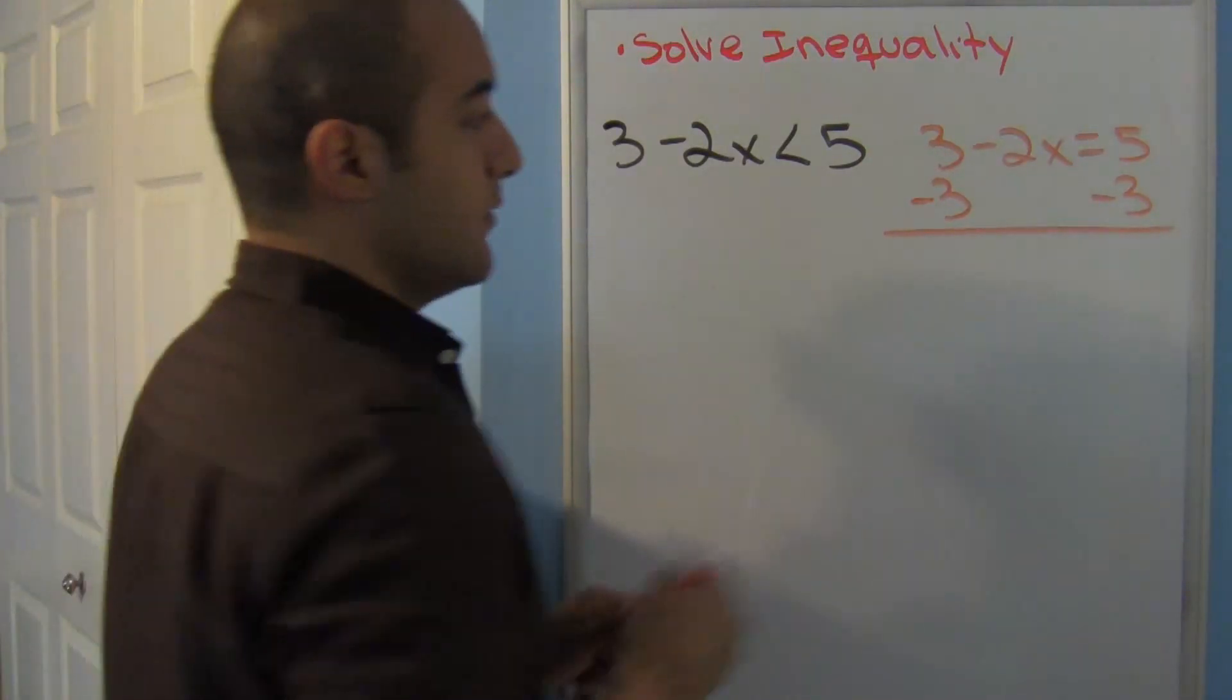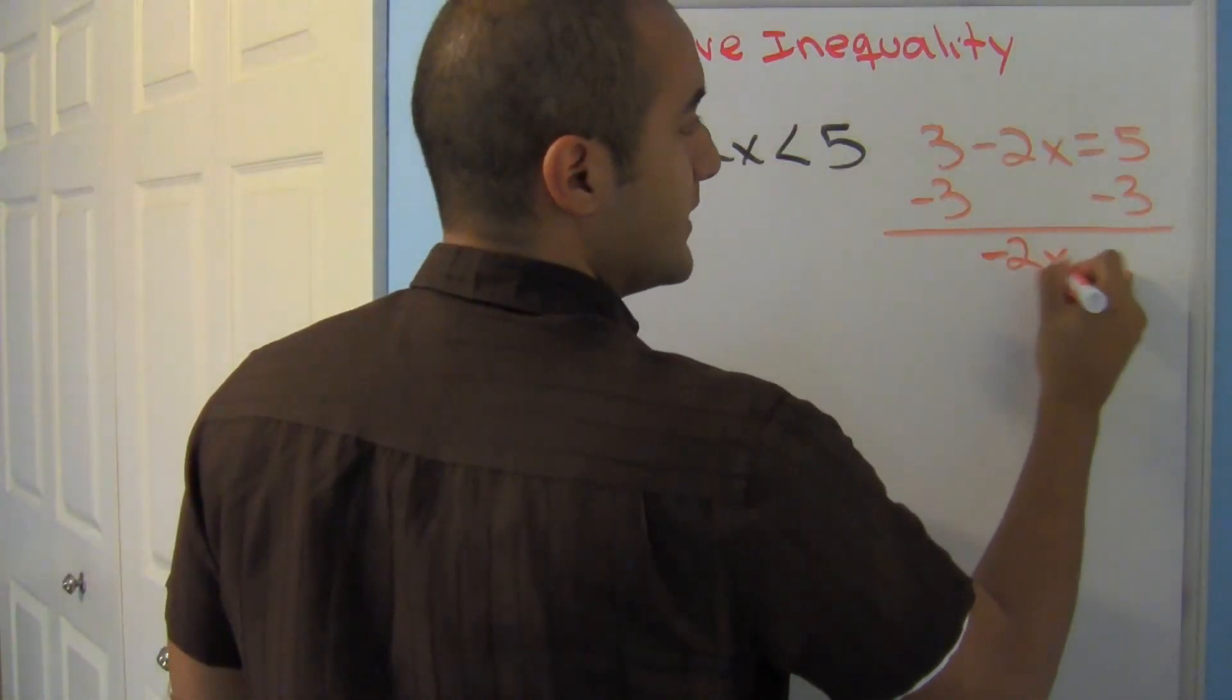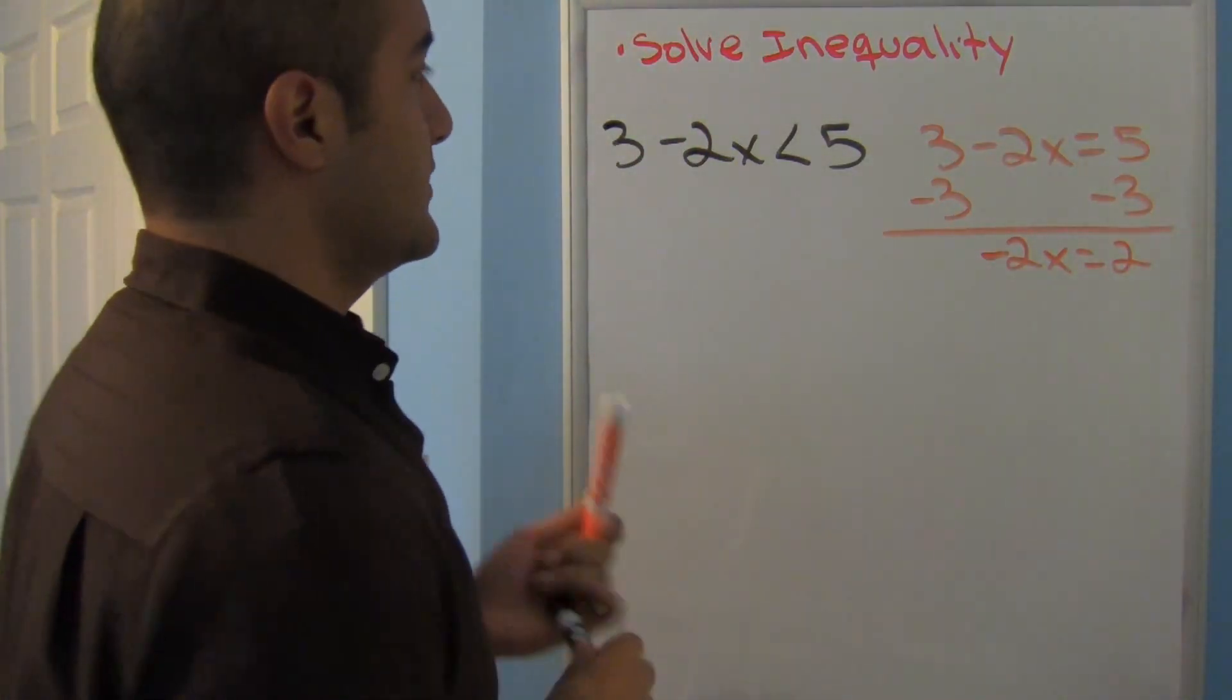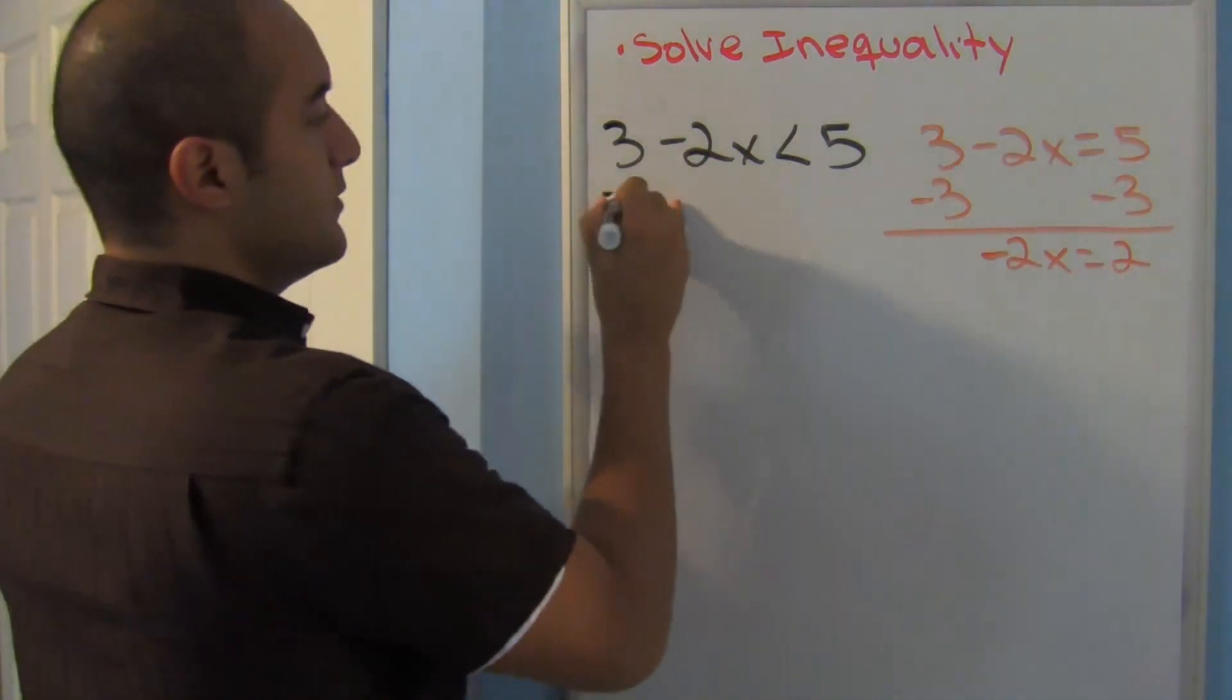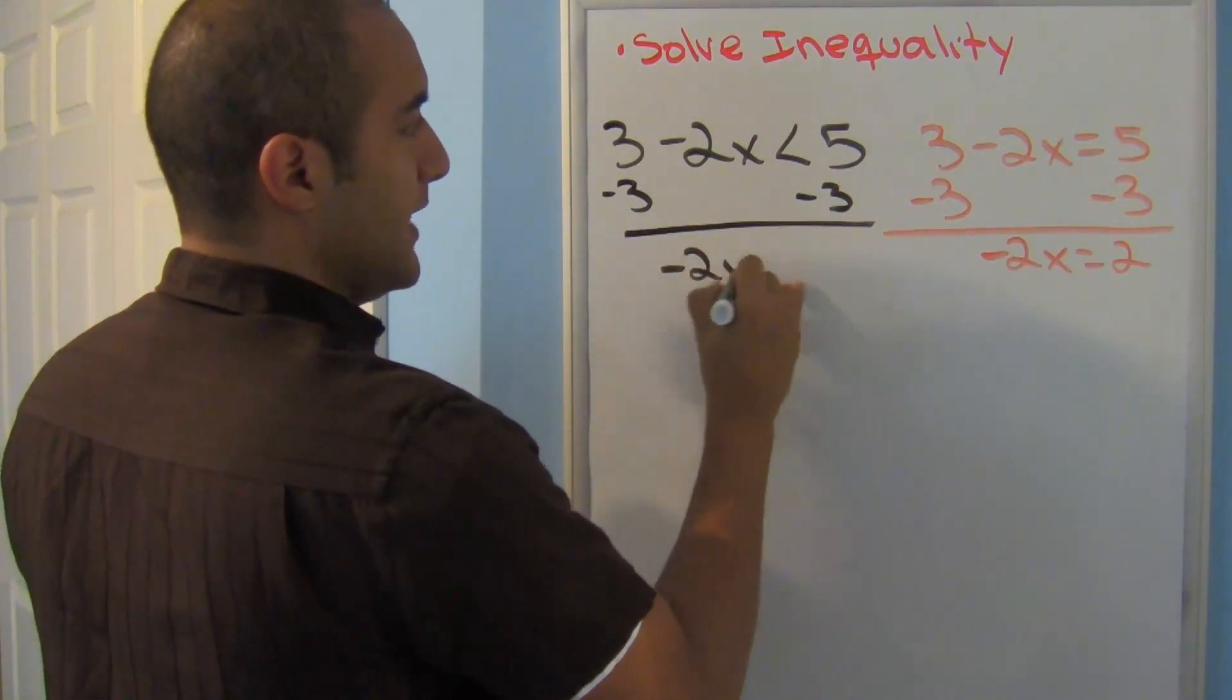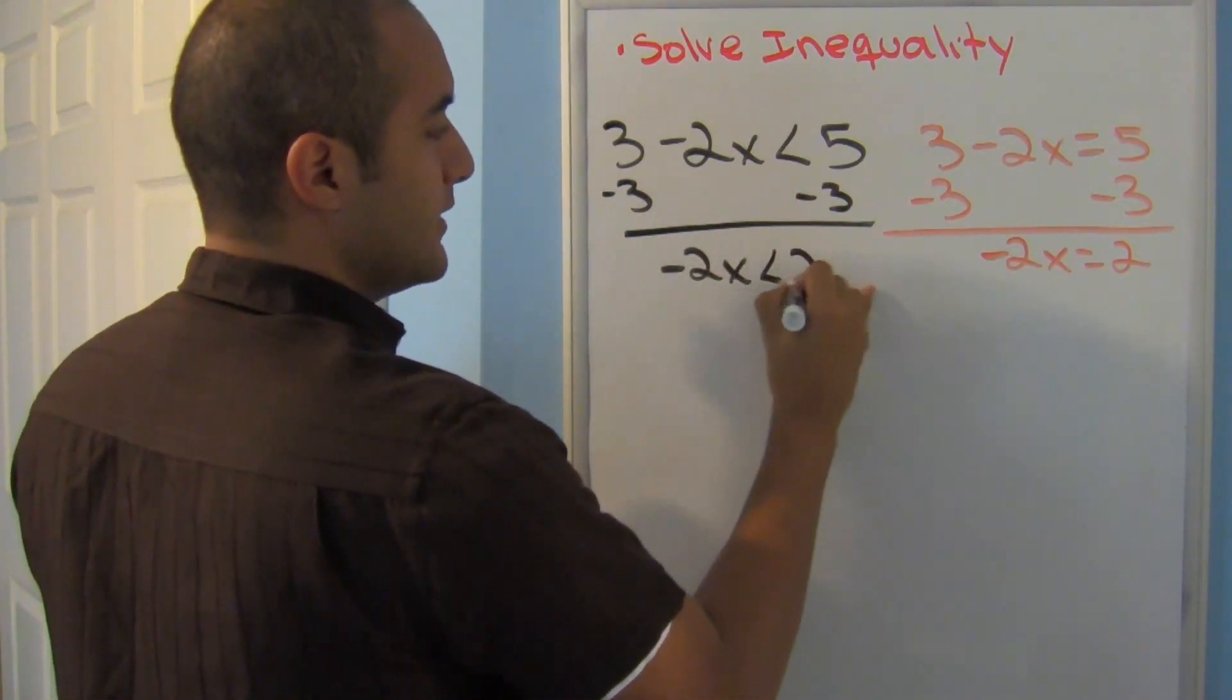So negative 2x equals 2. Let's try the same thing on the other side. Minus 3, minus 3, minus 3. Negative 2x less than 2.